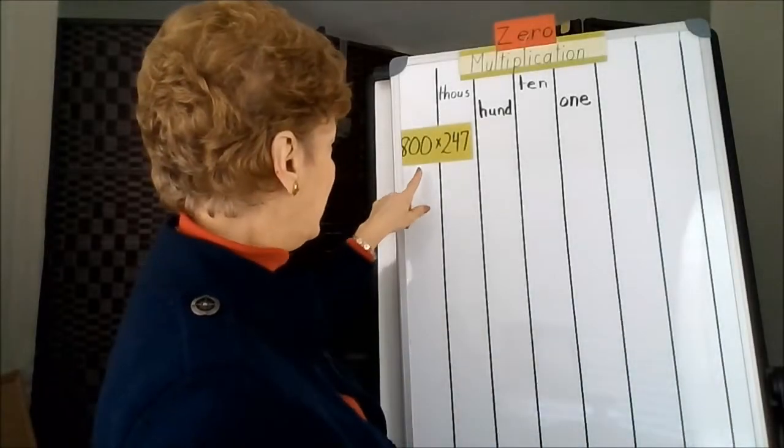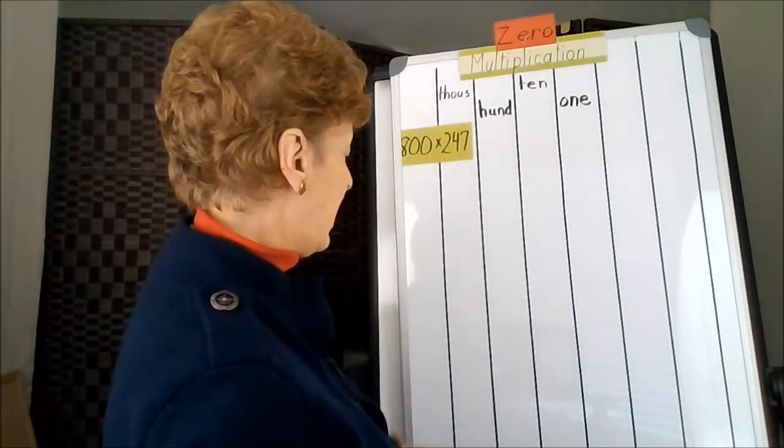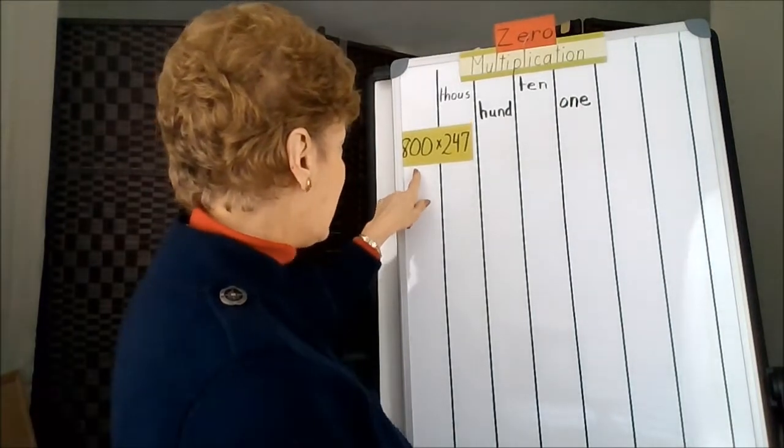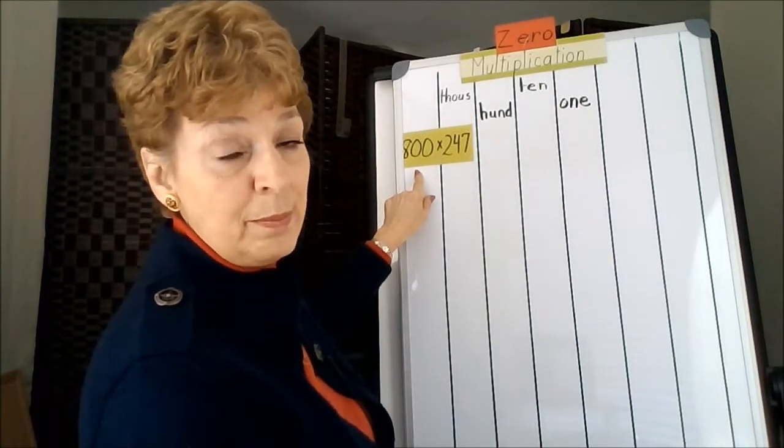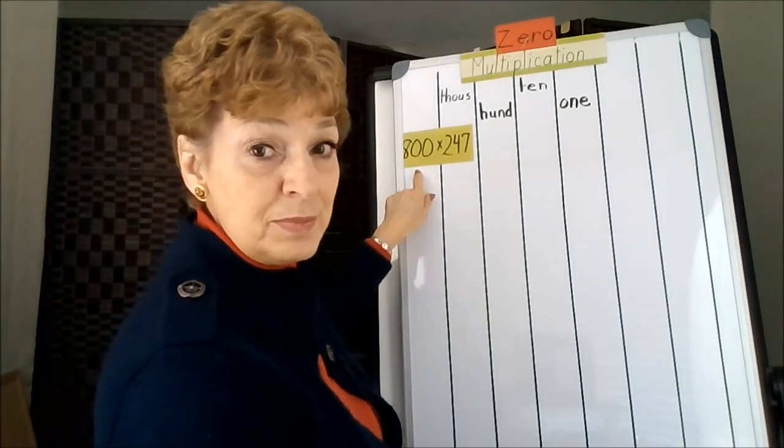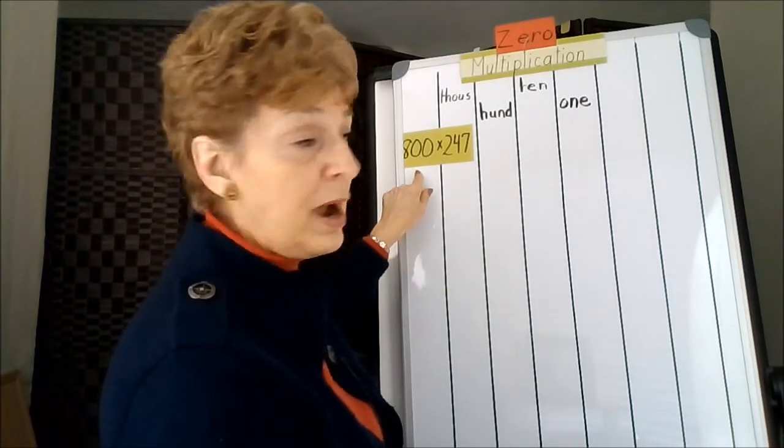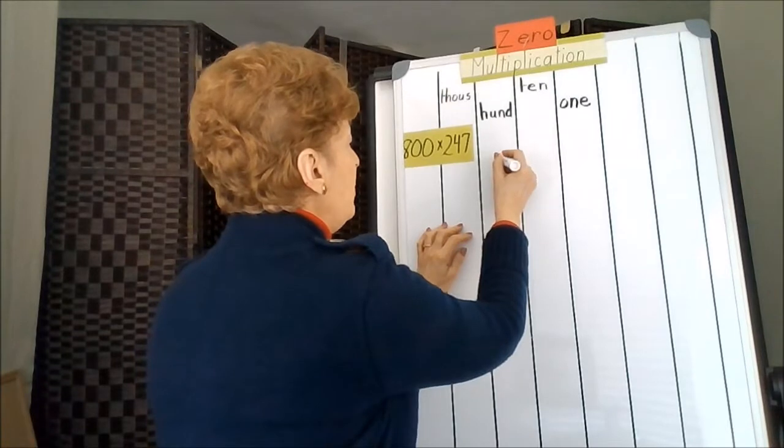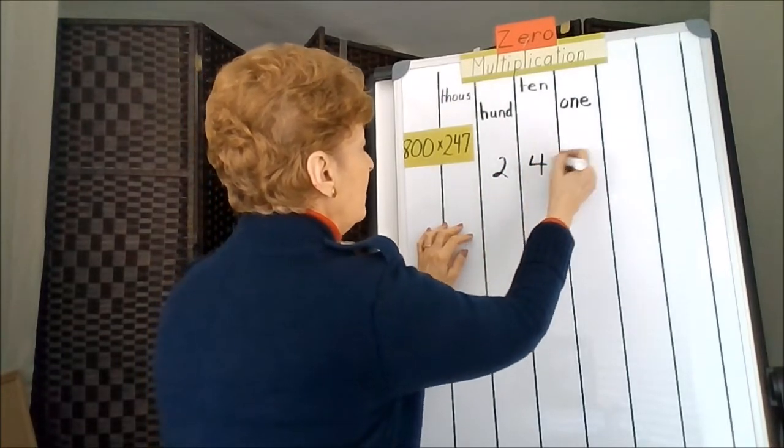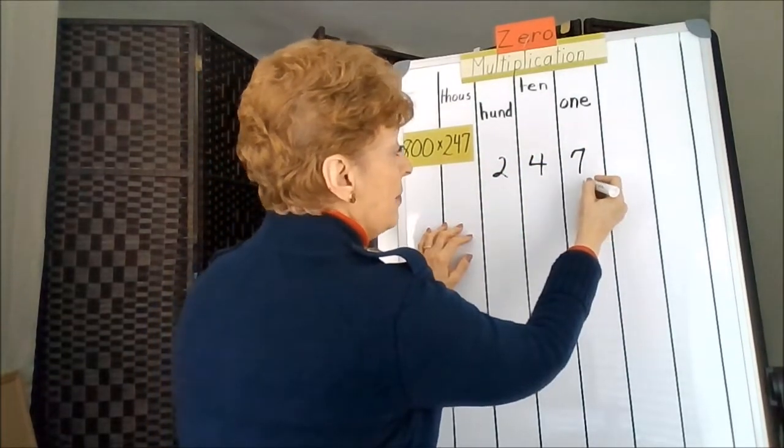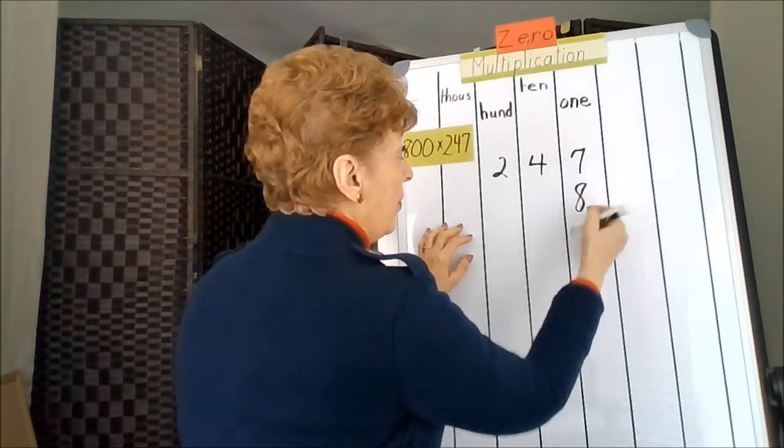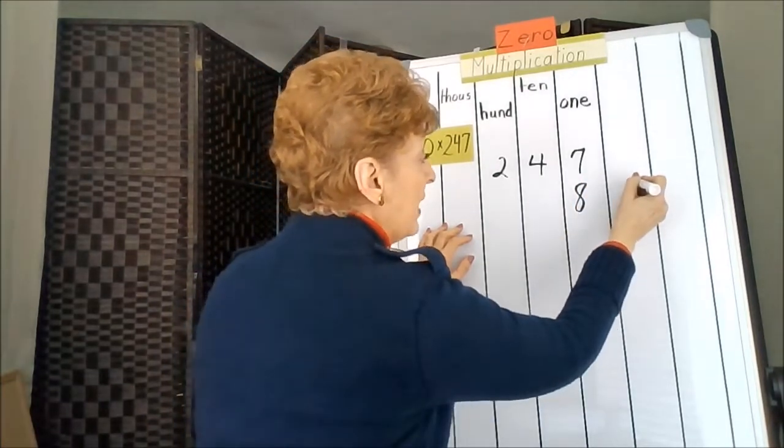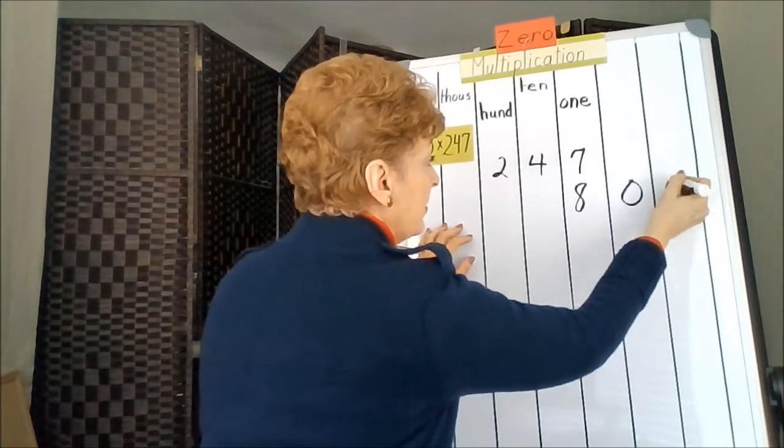Our next problem: 800 times 247. In this case, I need my zeros on the bottom, so I'm going to use the commutative property to flip these terms and start with the 247, then the 800. But I'm going to put 8 all the way over into the ones column so I can hang my zeros off the side.